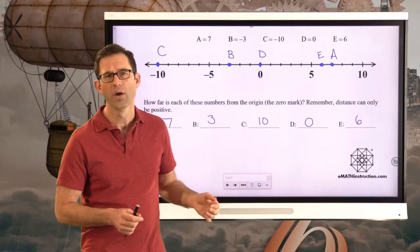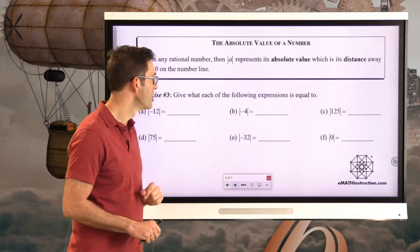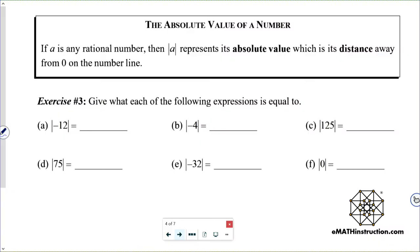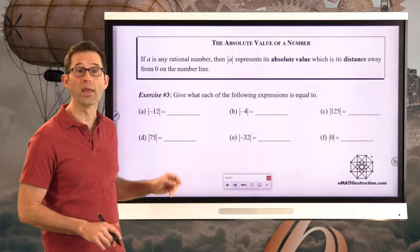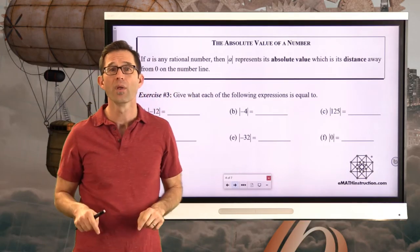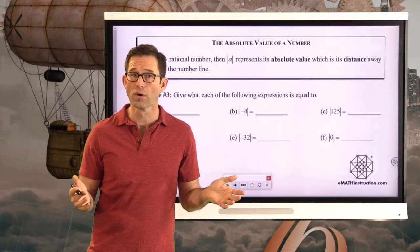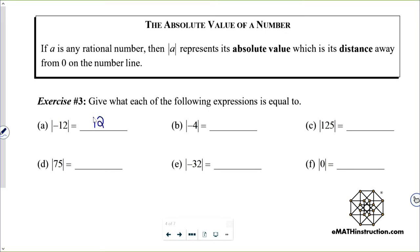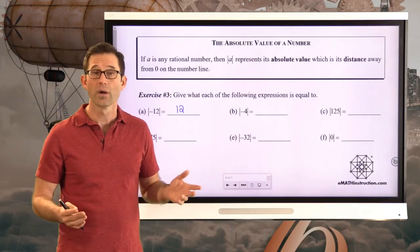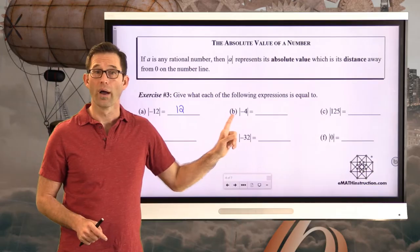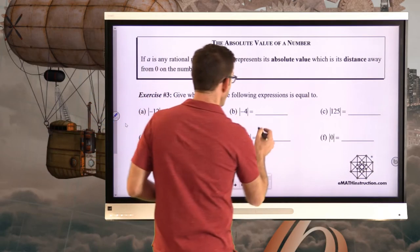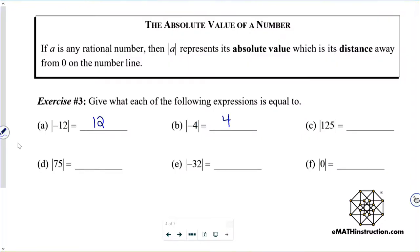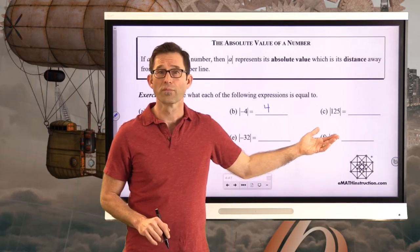Absolute value is always positive, with the exception that it could be zero. If A is any rational number, those two vertical bars around A represent its absolute value — its distance away from zero on the number line. Anytime you see a number in these two vertical bars, it is literally referring to the distance the number is away from the origin. For example, the absolute value of negative 12 equals 12. If I plotted negative 12 on a number line, it would be 12 units from the origin. Likewise, the absolute value of negative 4 is simply 4.